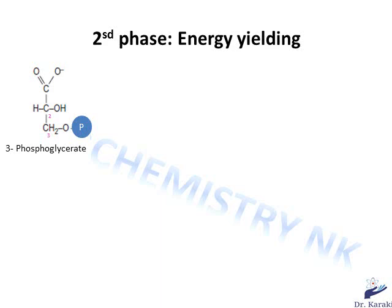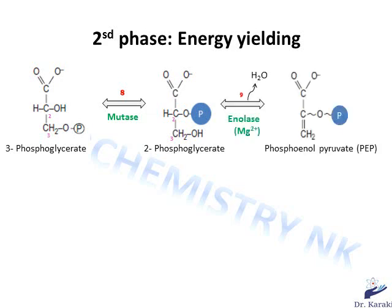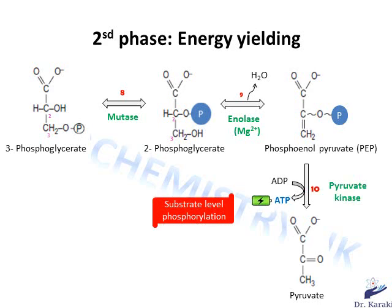In step number 8, mutase catalyzes the conversion of 3-phosphoglycerate into 2-phosphoglycerate by relocating the phosphate from carbon 3 to carbon 2. In the next step, enolase removes a water molecule from 2-phosphoglycerate to form phosphoenolpyruvate. Both reactions 8 and 9 are reversible. The last step of glycolysis is catalyzed by pyruvate kinase, which catalyzes an irreversible reaction. This involves the transfer of a phosphate group from phosphoenolpyruvate to ADP, forming ATP and pyruvate — another substrate-level phosphorylation. Since there are 2 molecules of phosphoenolpyruvate, we generate 2 molecules of ATP here.